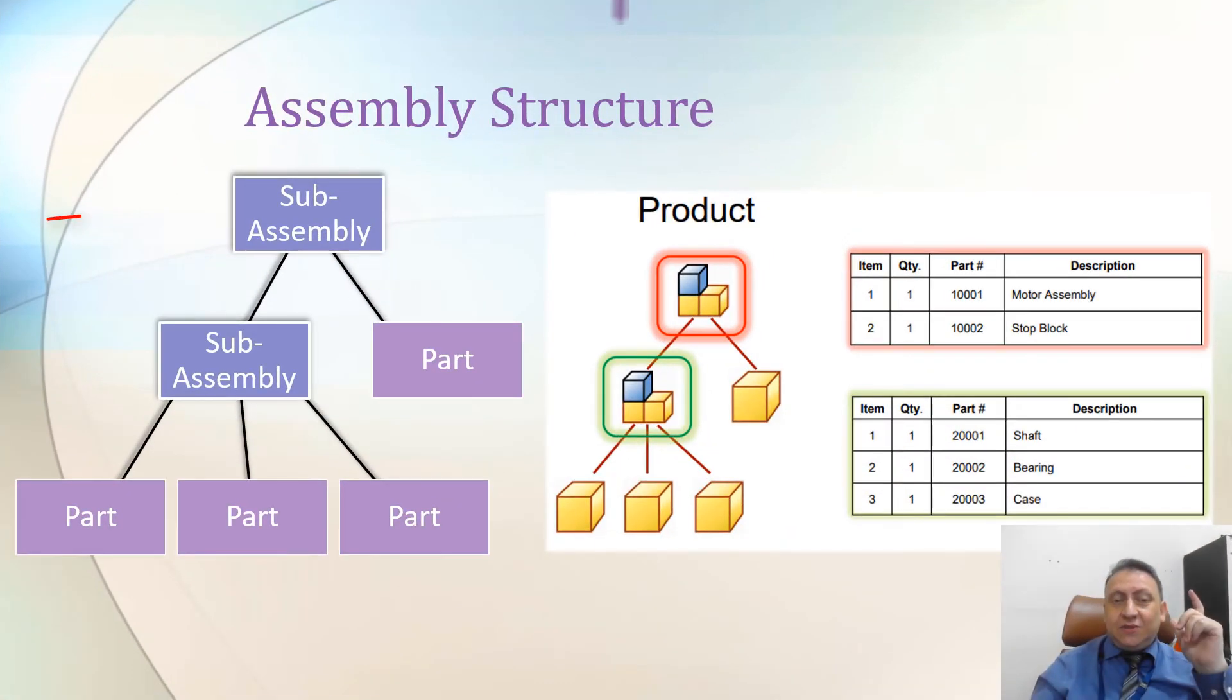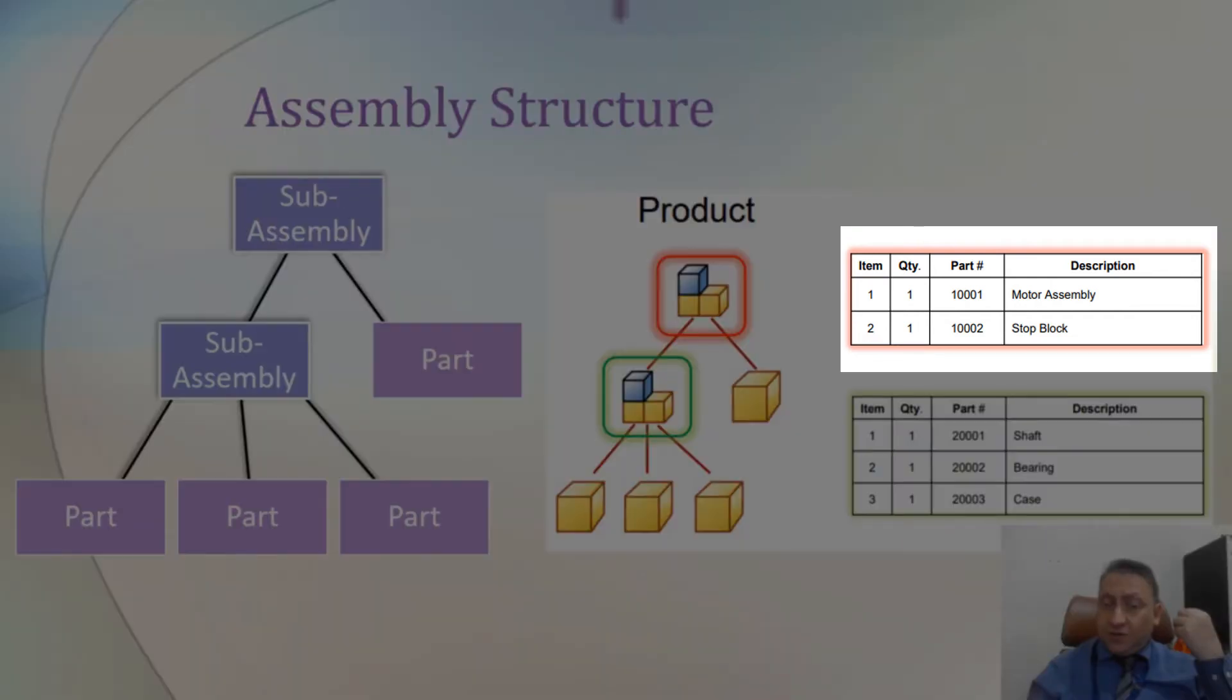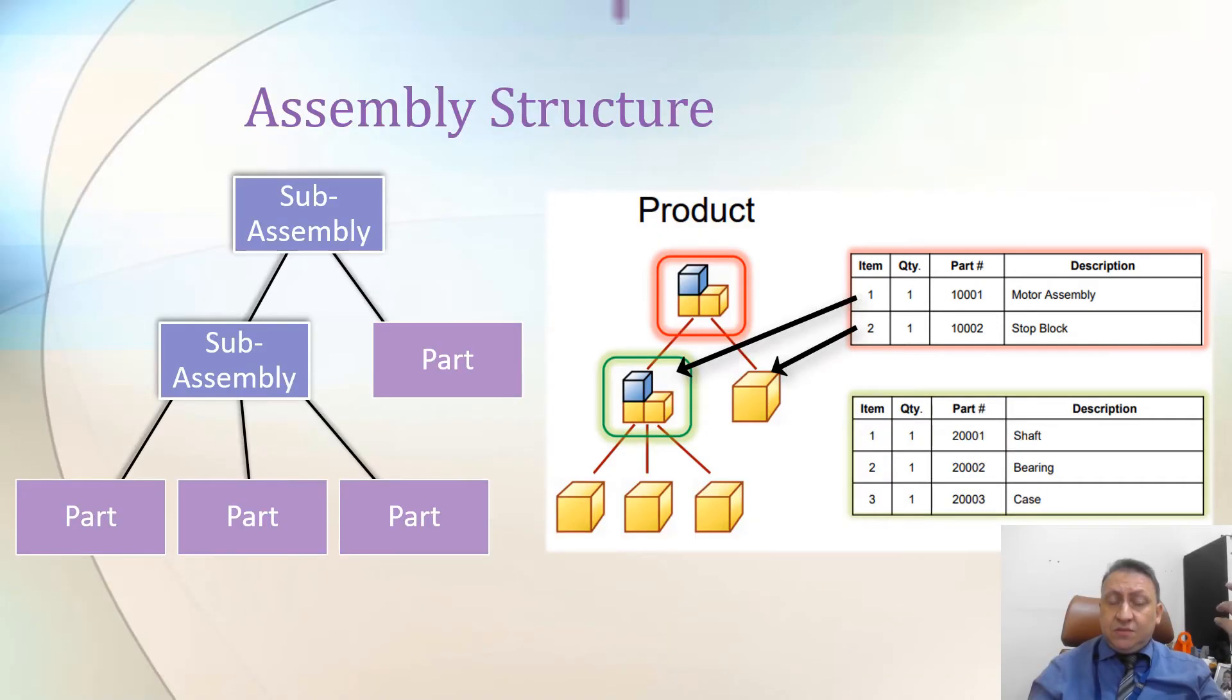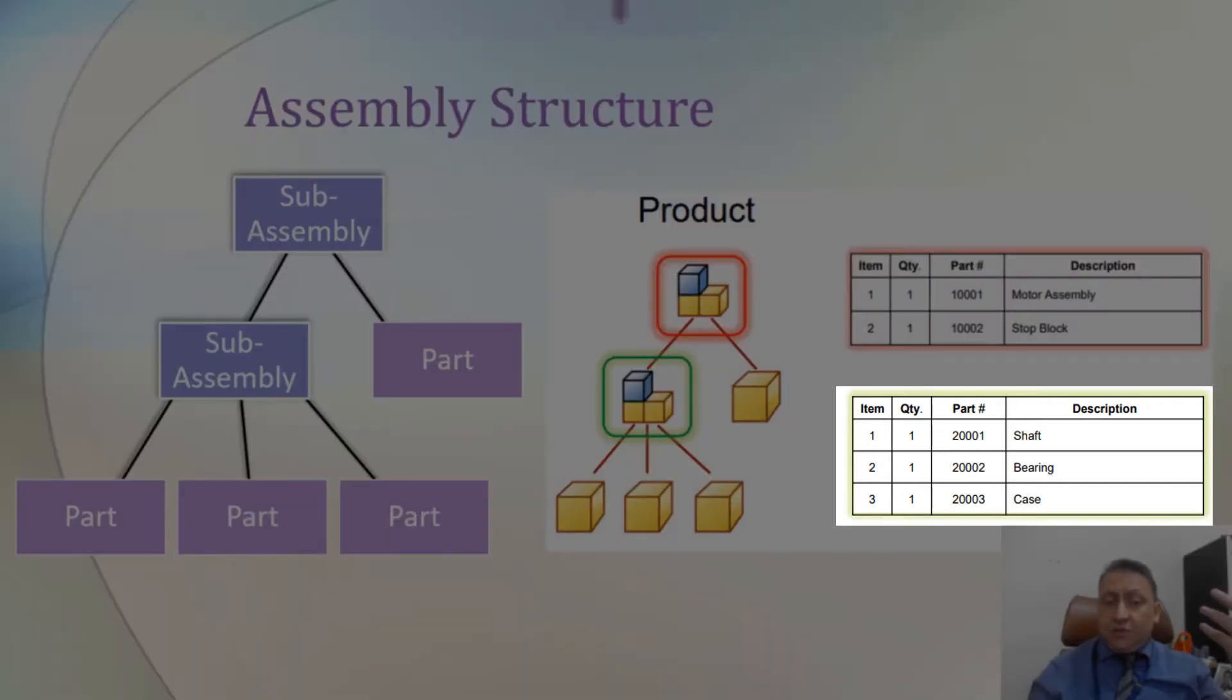This is sub-assembly drawing. We have one sub-assembly, and it's depicted here in icon, Autodesk Inventor icon. So this sub-assembly has two drawings, another sub-assembly and another part. If you look to the bill of material here to the right side, you will have that you have motor assembly and stop block. This is motor assembly and the stop block. In the green here, it has three parts, consists of three parts, and the three parts are shaft, bearing, and case.